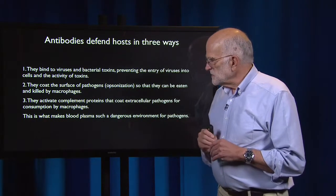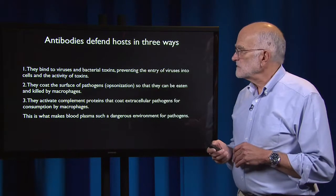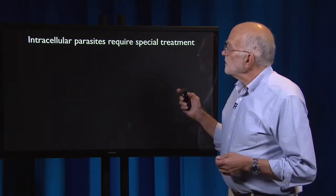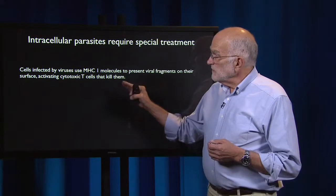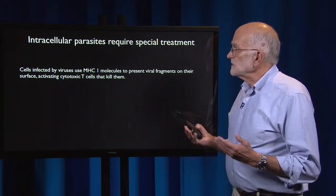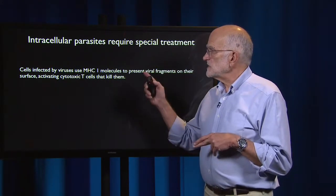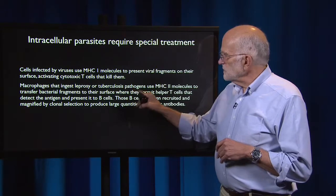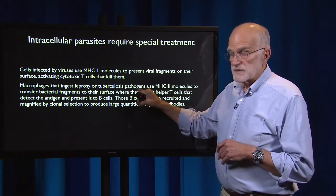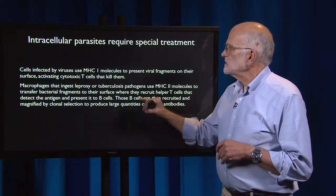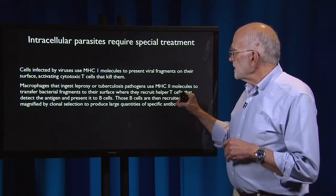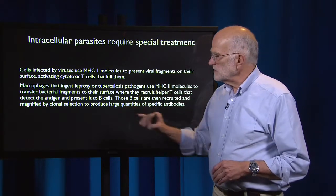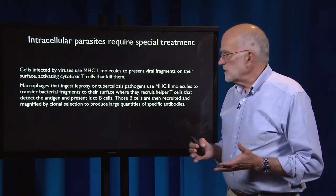This is what makes blood plasma such a dangerous environment for pathogens. However, intracellular parasites — those not in the bloodstream — require special treatment. Cells infected by viruses use MHC1 molecules to present viral fragments on their surface, which activates cytotoxic T cells that kill virally infected cells. Macrophages that ingest leprosy or tuberculosis pathogens use MHC2 molecules to transfer bacterial fragments to their surface, where they recruit helper T cells that detect the antigen and present it to B cells. Those B cells are then recruited and magnified by clonal selection to produce huge quantities of specific antibodies.